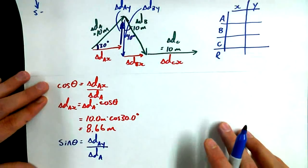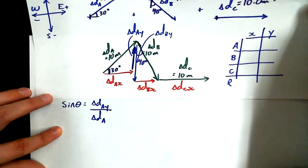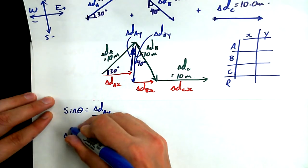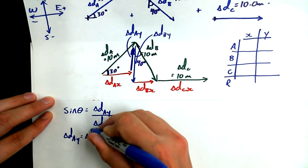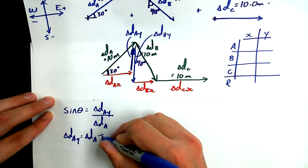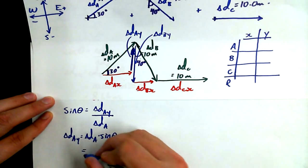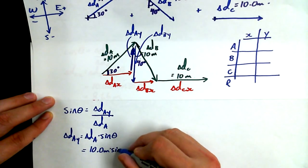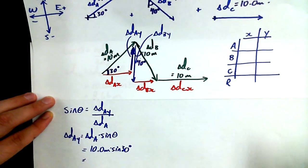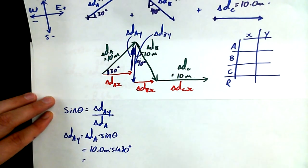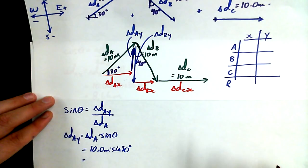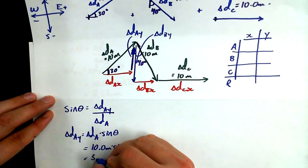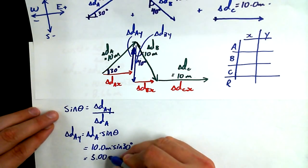So if I say sine of theta is equal to delta dAy divided by delta dA, can you see that that's going to get us this vertical component here, this y component? Get the delta dAy all by itself, and you get delta dAy equals delta dA times sine of theta, and then subbing in our values, that's 10.0 meters times sine of 30 degrees. Sine of 30 degrees happens to be 0.5. So 0.5 times 10 is 5.00 meters.